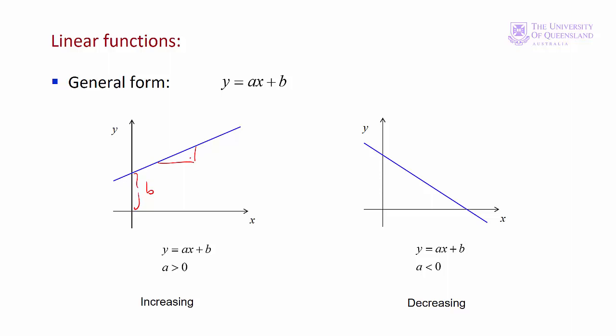On the left hand side we have a positive slope with a is greater than zero, so delta x and delta y there that changes, so a is equal to delta y on delta x. That's an increasing function. On the right hand side we have a decreasing function that slopes downwards to the right. In this case a is negative.